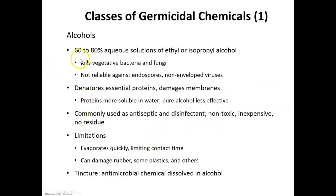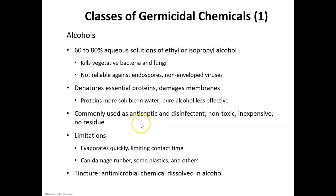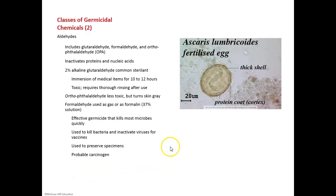So let's look at some of these chemicals, and a lot of these we've used in our own houses already. Alcohol is effective at killing vegetative cells as well as most fungi, but it does not kill endospores and it does not inactivate non-enveloped viruses. It works by denaturing proteins and damaging the cell's membranes. Alcohol is used typically as a disinfectant or an antiseptic. It is non-toxic and relatively inexpensive. Some limitations are that it evaporates rather quickly and it can damage certain materials.